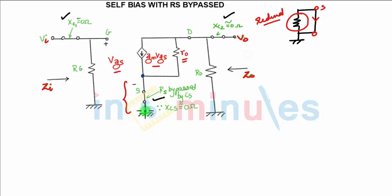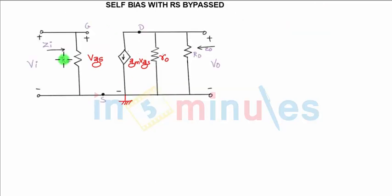Between source and ground you don't have anything, so the circuit can be redrawn like this: you have RG, GM*VGS, source is grounded, RO, and RD. So it is nothing but similar to fixed bias.